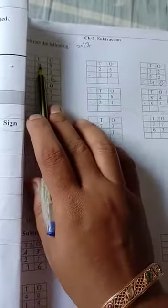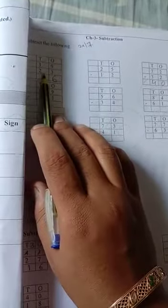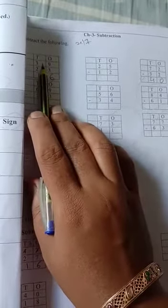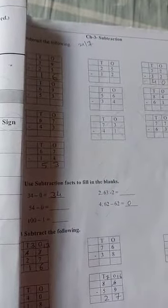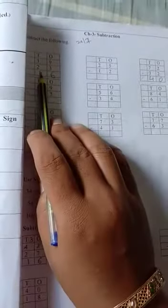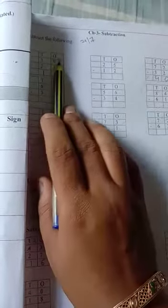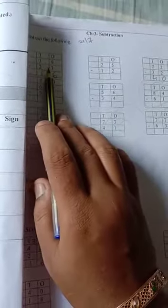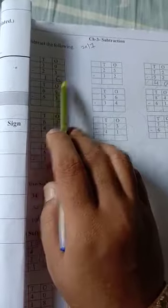Now this side, 3 minus 2. So after 2 till 3. So 2 after 3. How many fingers open? 1. So it's 1. That means 39 minus 23, our answer is 16.